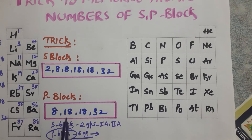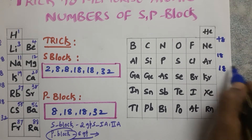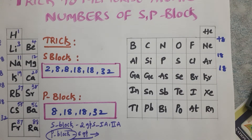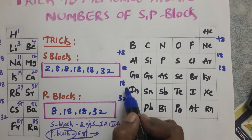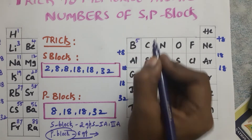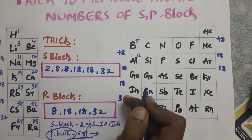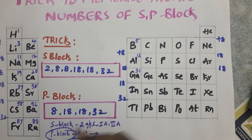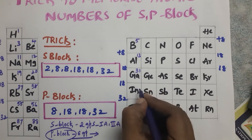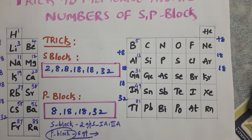For p block elements, the trick is to add 8, 18, 18, 32 successively. Starting with boron, the atomic number is 5. Then 5 plus 8 equals 13 (aluminium), 13 plus 18 equals 31 (gallium), 31 plus 18 equals 49 (indium), and 49 plus 32 equals 81 (thallium). This is how we calculate atomic numbers for p block elements.